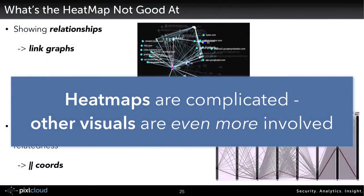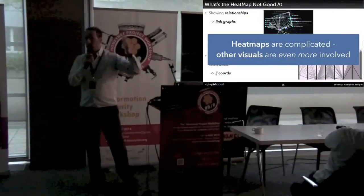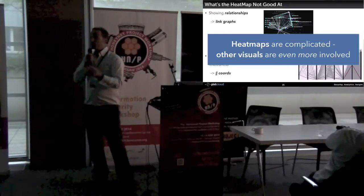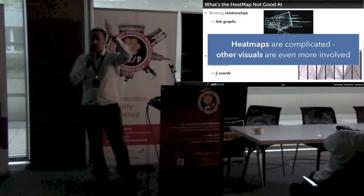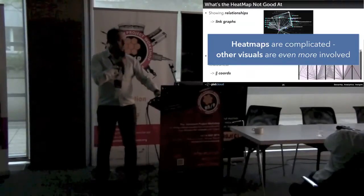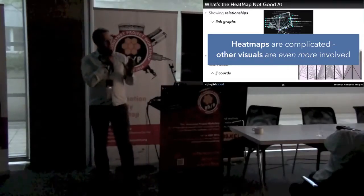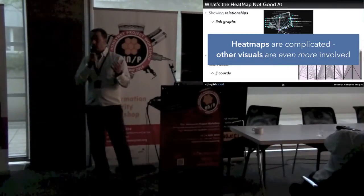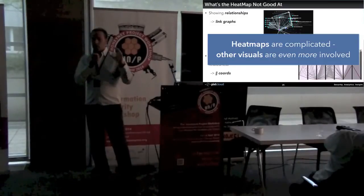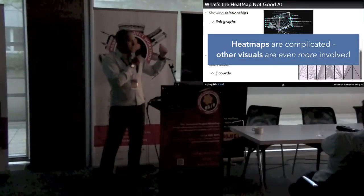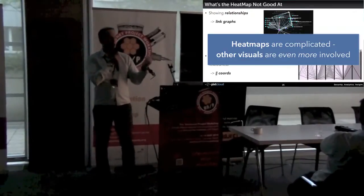I keep advocating that heat maps are great, but for certain things they're just not. If you want to see relationships between different things, you probably want a link graph. If you want to see multiple dimensions at the same time, a parallel coordinate is great. I hope I've shown you there's a lot to think about when generating heat maps — and those are simple visualizations that everybody understands. Now try to imagine how hard it is with other visualizations. What's the interactivity on link graphs? When you hover, what do you see? What about showing shortest paths between different things?